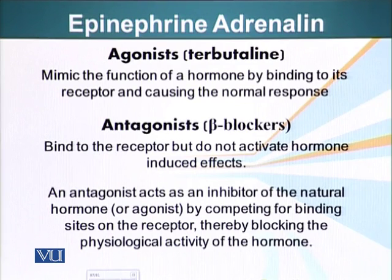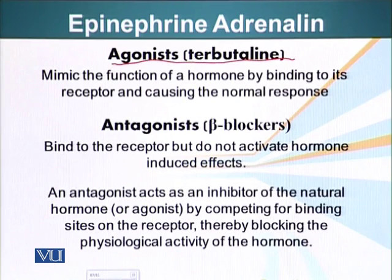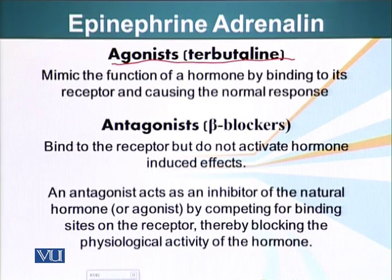Agonists, on the other hand, are like the natural ligand — they can bind the receptor. These are artificially produced ligands. For example, terbutaline, when given to patients who have asthma, can bind the respective epinephrine receptor, causing smooth muscle relaxation and allowing more air to come in. Terbutaline binds only those receptors present on the surface of lung muscle cells and not heart cells. This is how we can selectively choose which receptor to activate and which to block.